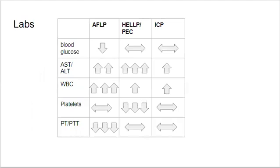This chart helps distinguish lab abnormalities between different liver pathologies of pregnancy. In acute fatty liver, hypoglycemia is very common, which is usually not the case in HELLP or ICP. AST and ALT will be elevated in all of these conditions; however, in ICP the elevation is typically between one and five times normal, in acute fatty liver it's usually between five and ten times normal, and in HELLP or preeclampsia it's anywhere between one and 100 times normal. A very significantly elevated LFT should point more toward HELLP or preeclampsia. White count can also be elevated in any of these conditions but is usually most profoundly elevated in acute fatty liver.